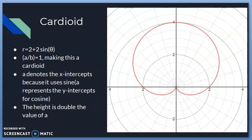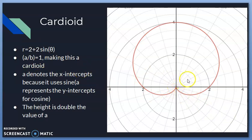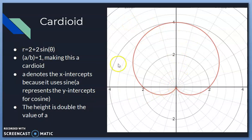Cardioids are also a type of limaçon where a/b = 1, creating the characteristic dip. Since sine is used here, it's symmetrical to the y-axis and a represents the y-intercepts. The height is double the value of a — so if a = 2, the height is 4 — and the x-intercepts are also at the value of a.